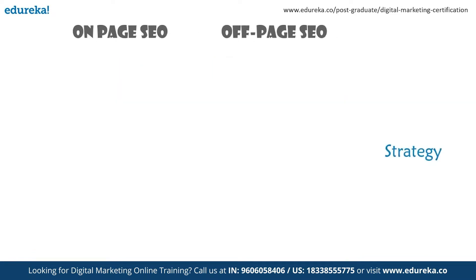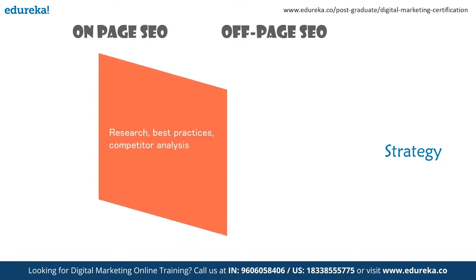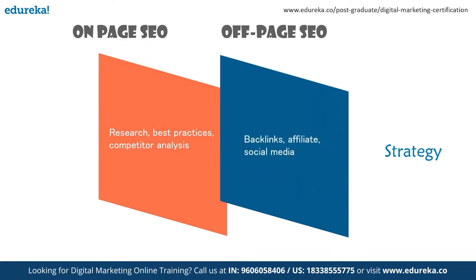Talking about the strategy: on-page SEO deals with research, best practices, and competitor analysis. It is driven by researching proper and relevant keywords, following the latest best practices for compliance with search engine algorithms, and using content gap analysis to see which keywords your competitors are using. Off-page SEO follows the strategy of backlink research, social media, and influencer marketing, helping you find where your audience is and identifying top writers, bloggers, and publishers in your field.